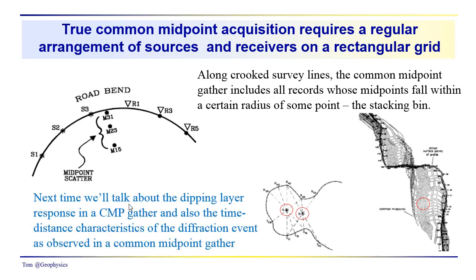Next time we're going to talk about the dipping layer response in the CMP gather. We'll just limit our discussion to the CMP gather. We've already talked about the dipping layer response in shot records. We're also going to talk about an event we mentioned at the very beginning of our discussions of ray tracing.